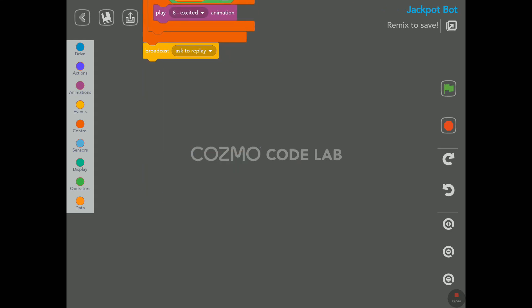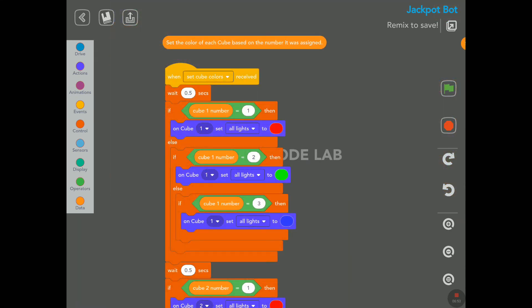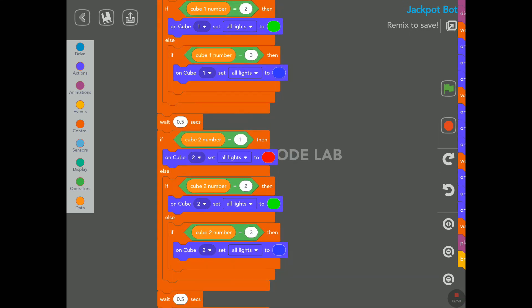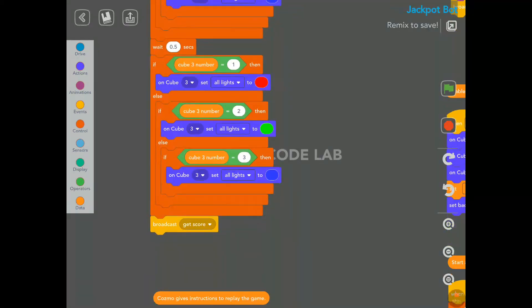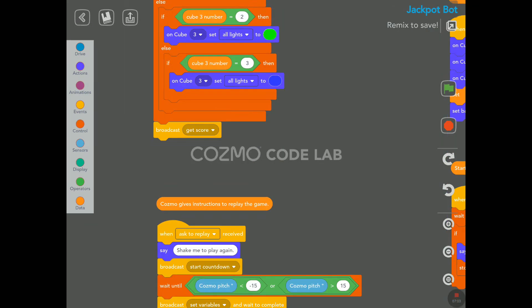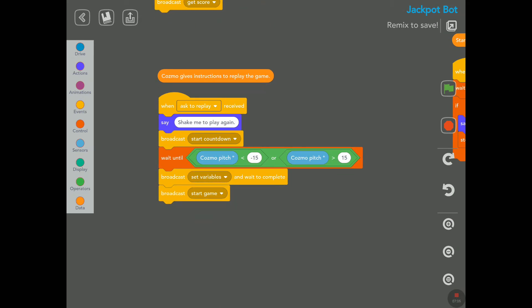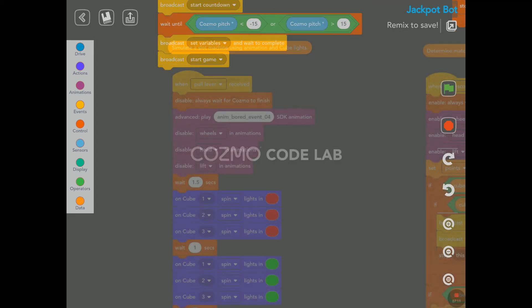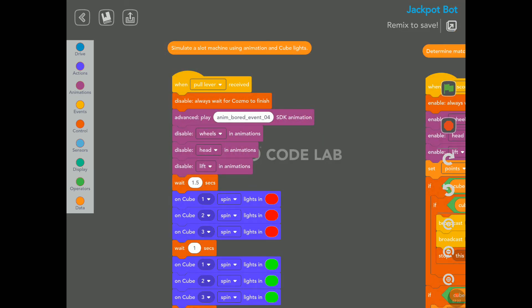Here we have set the color of each cube based on the number it was assigned. Cozmo gave instructions to replay the game. Yeah, we heard him say shake me to play again. Simulate a slot machine using animation and cube lights. So this is the advanced play in the SDK here. This is the slot machine animation, I guess it's called anim board event 04. I think this is the slot machine.